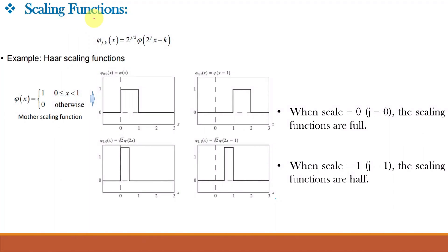Let us first understand the scaling functions. In the equation of the scaling function, translation k determines the position of phi_jk(x) along the x-axis, and scale j determines its shape — that is, its width and amplitude. For this unit-height, unit-width Haar scaling function, when the scale is 1 (j=1), the scaling functions are half as wide as when the scale is 0. In the equation, if we keep j=1, then it is 2 raised to 1/2 into phi, and 2 raised to 1/2 is nothing but root 2.